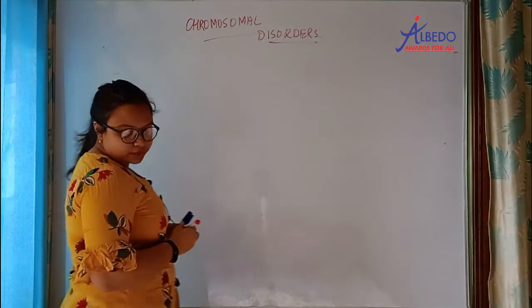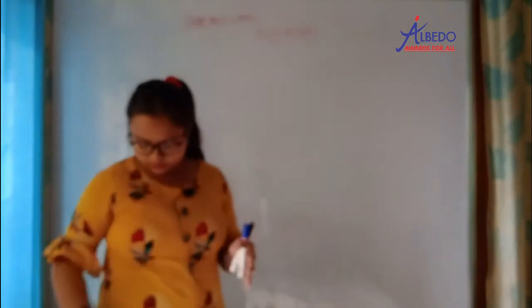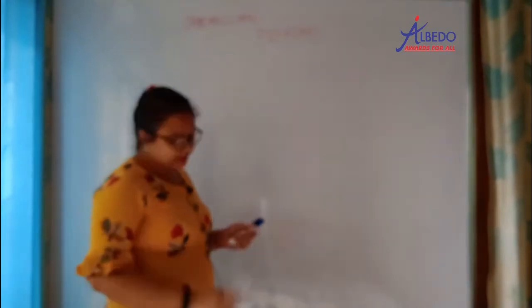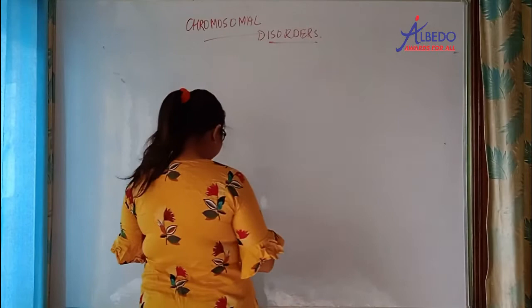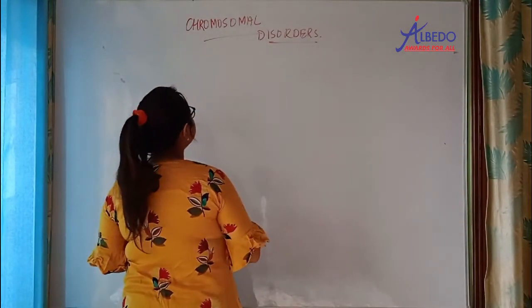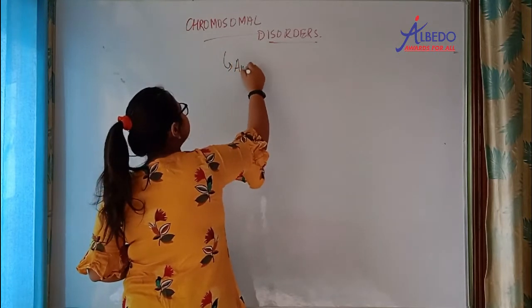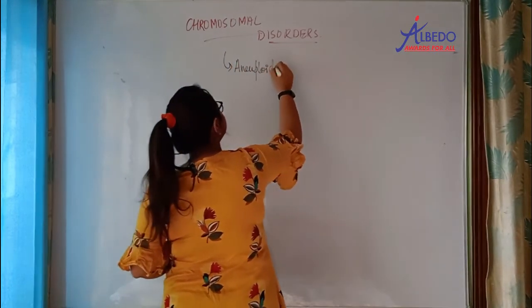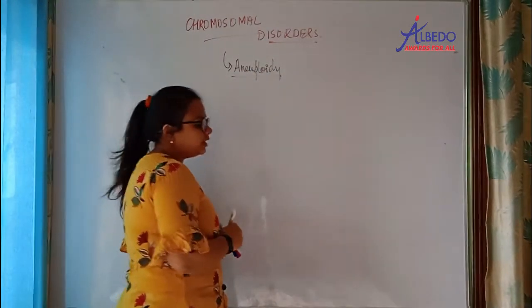So let us now start with chromosomal disorders. In your cells, any chromosomal abnormality is given because of a condition known as aneuploidy.